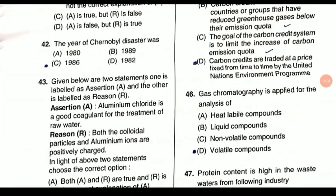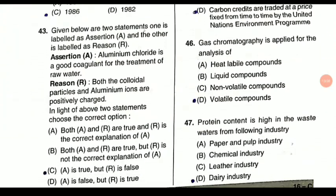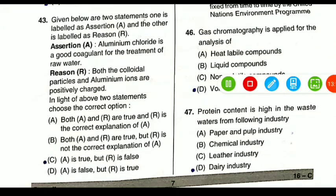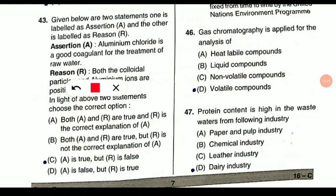Question 46: Gas chromatography is applied for the analysis of what kind of compounds? It is used for analyzing volatile compounds — those that are easily or readily vaporized.